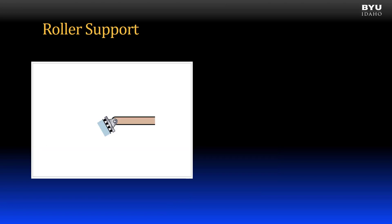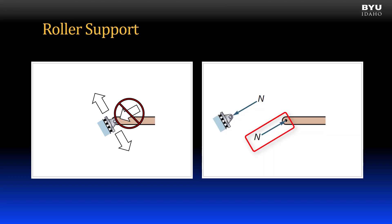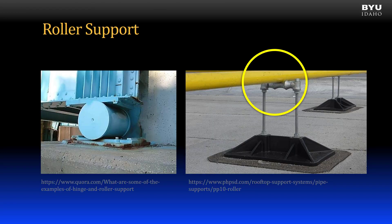A roller support is similar to a rocker. The roller can translate along the supporting surface but cannot penetrate the surface. So we get a single reaction force normal to the surface. The roller does not prevent the end of the body from rotating, so there is no moment reaction. Here are a couple of examples of roller supports: one for a bridge on the left and one supporting a pipe on the right.